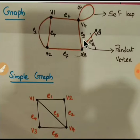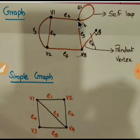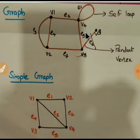Each edge is incident on two vertices. For example, E5 is incident on V4 and V3, and we can say V4 and V3 are the end vertices of E5.